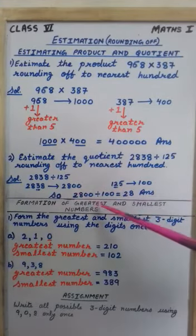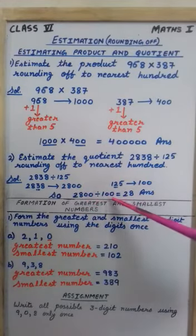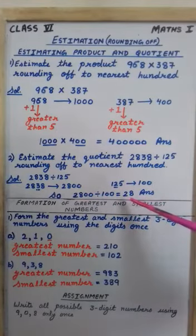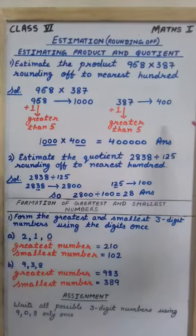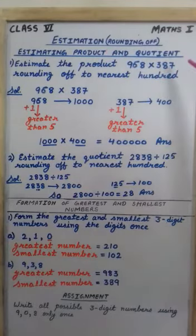And now division. So 2800 divided by 100. When we will divide these numbers we are getting 28 as answer. So this is how to round off the numbers. We have done for addition, subtraction, for product and for quotient.